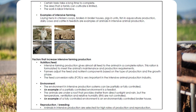Environment: the environment in intensive production systems can be partially or fully controlled. An example of a partially controlled environment is a feedlot — the animals are under a roof that provides shelter from direct sunlight and rain, but the temperature, ventilation, and relative humidity are not controlled. An example of a fully controlled environment is an environmentally controlled broiler house.